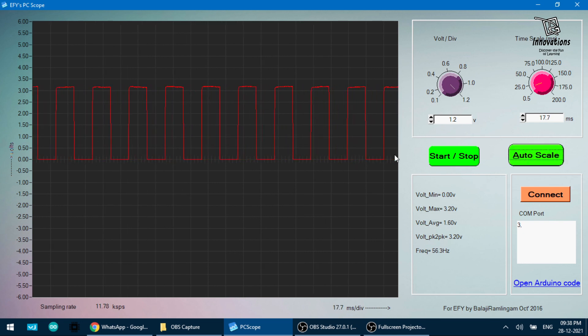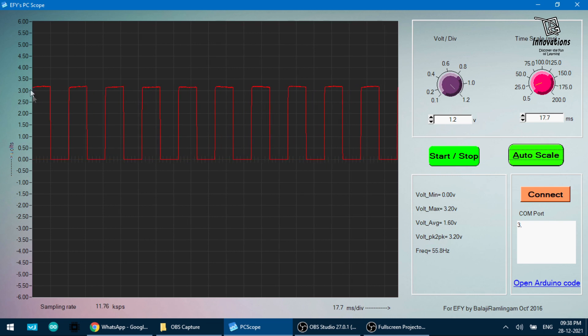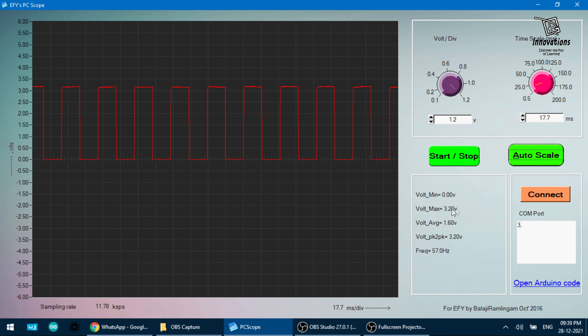Now you see, as soon as I pressed auto scale, it's showing nice square wave pulses and it's also showing the specifications here. It's showing 56 or 57 Hertz frequency, 56.8, an average of 56. Peak to peak voltage is 3.20. We can see the peak voltage here. Voltage average is 1.6. Voltage maximum is 3.2 and voltage minimum is 0. So it is generating somewhere around 56 Hertz of frequency.